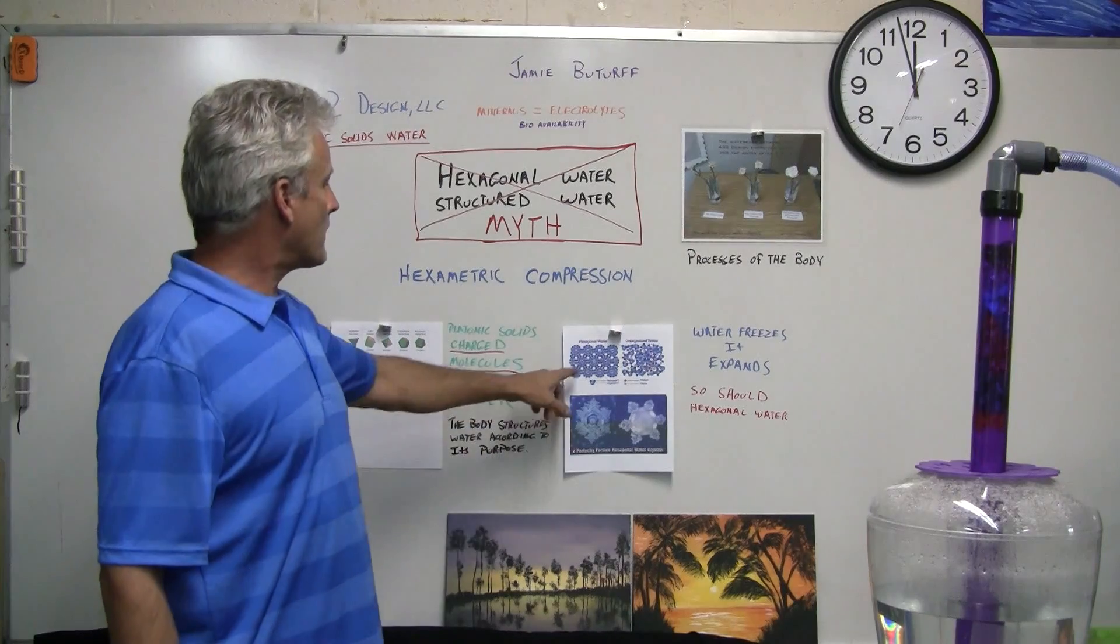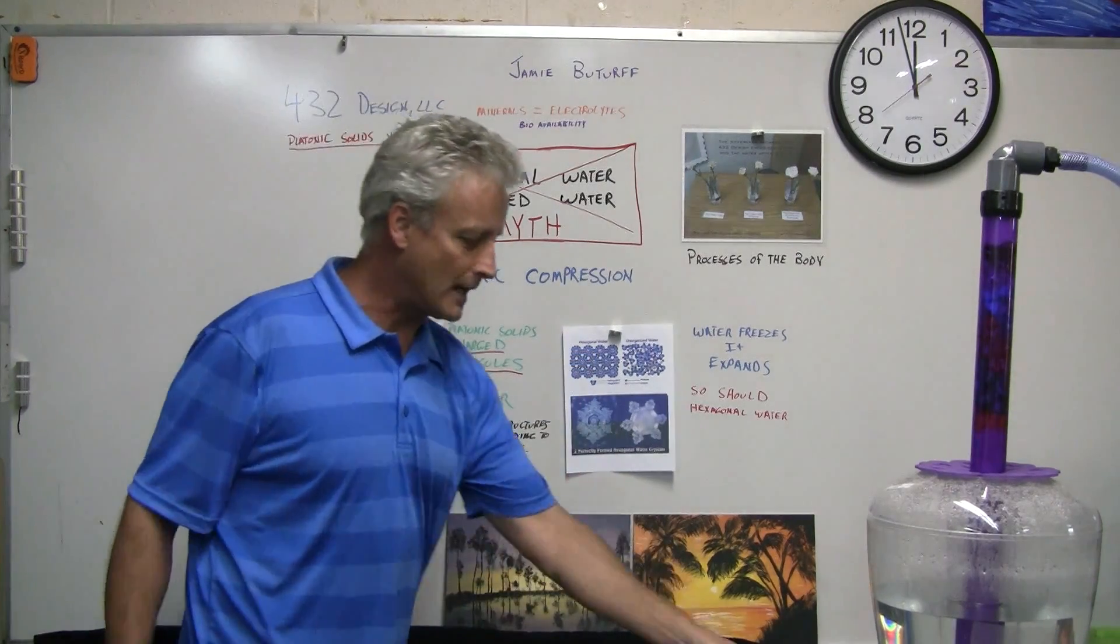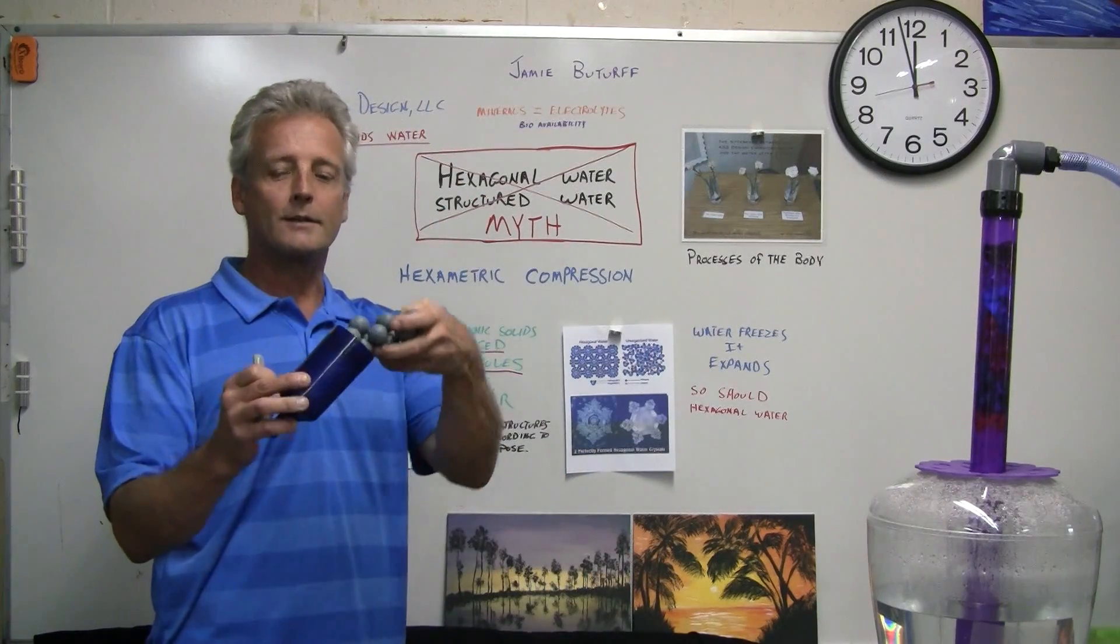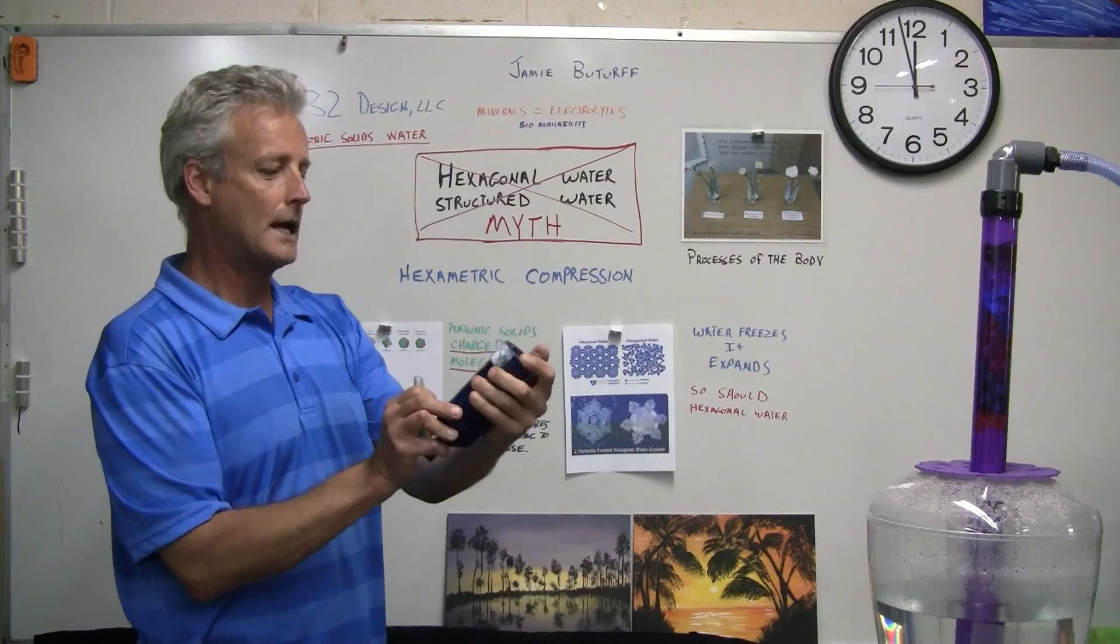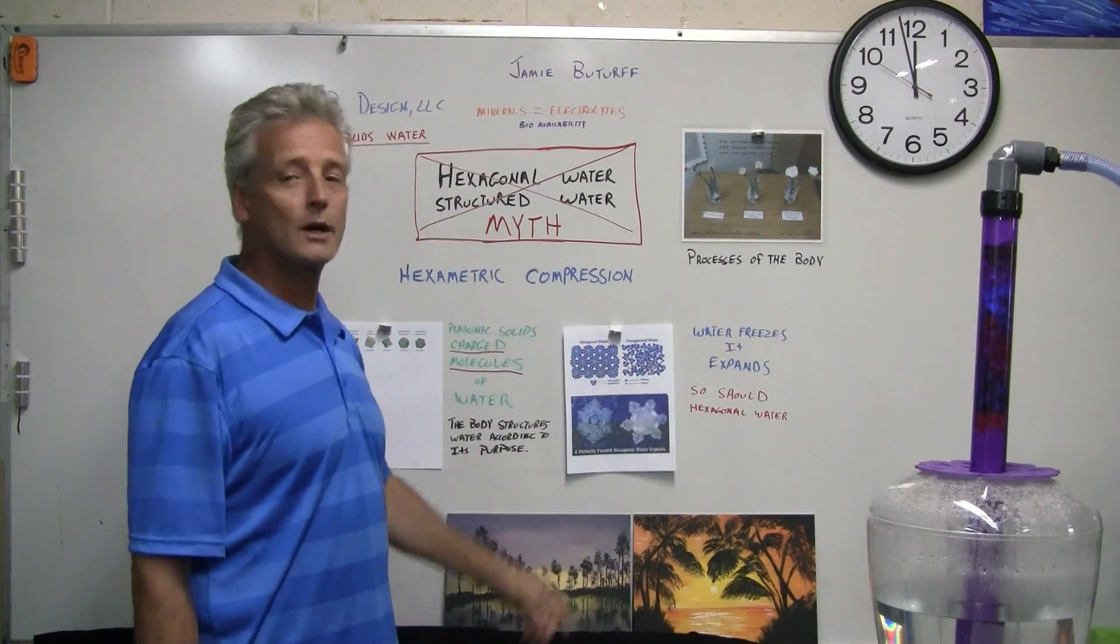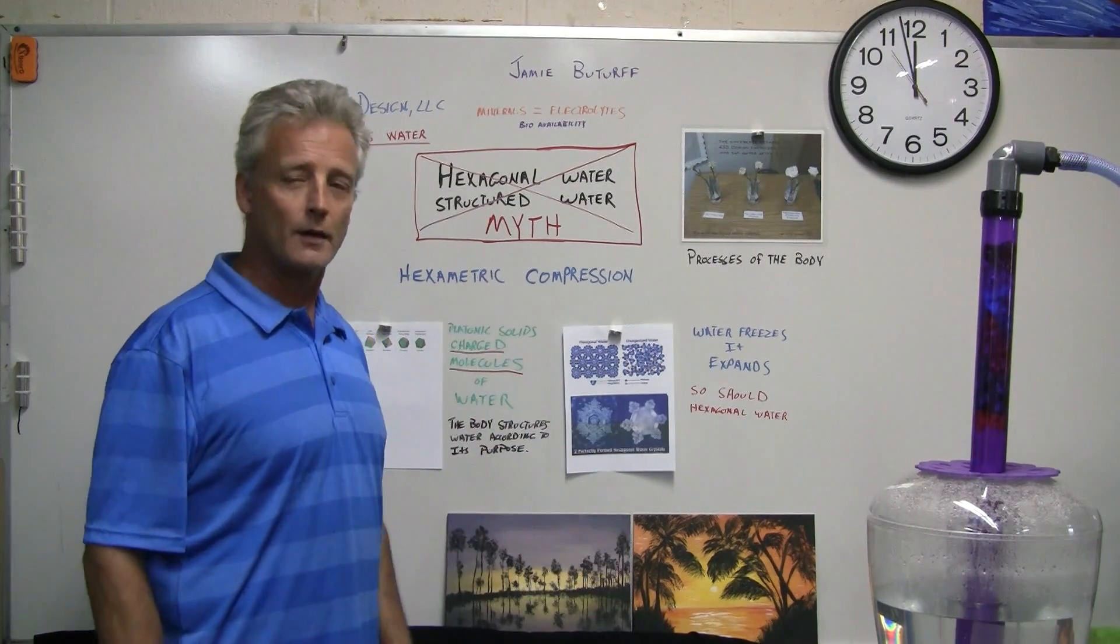This is one of the pictures they have up about explaining how hexagonal water is formed through their various devices, like for example this $400 Clayton Nolte natural action thing. They say when you pour water through there it creates this hexagonal water, and it's supposedly way better for you and hydrates better and all this stuff.